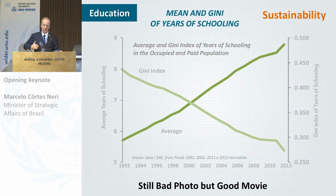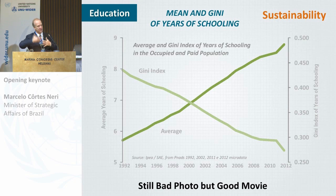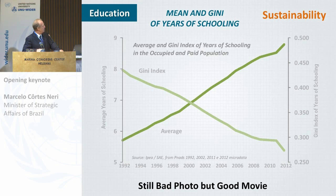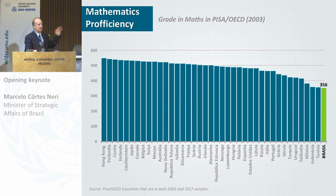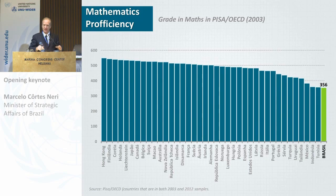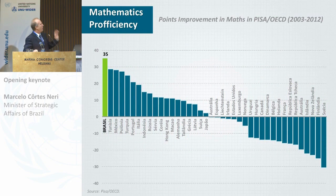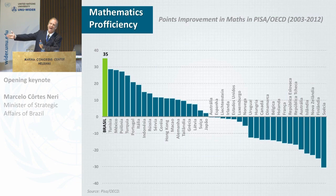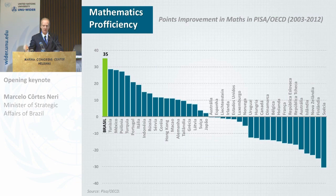Looking at the trends of mean and Gini of years of schooling — it's still a bad picture but a good movement: falling inequality and increasing mean, though levels are still low. Looking at PISA proficiency in math: among all countries observed in 2003 and 2012, Brazil had the lowest proficiency in math in 2003. When we look at the change from 2003 to 2012, this was the highest change. The same story applies — still a bad picture, with only about four countries behind us in PISA, but it was a big movement. The advantage of bad social indicators is that you can advance them faster, though that doesn't mean you will.